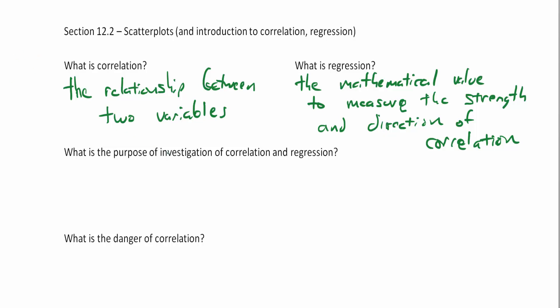The purpose of investigation of correlation and regression is to see if x and y are related. The three definitions you just wrote down for correlation, regression, and the purpose are very loosey-goosey definitions, explained at a lower level. If you want to see the actual mathematical definitions, you can check your book. But this is what we are going to focus on in this chapter - we're going to try to see if the factor of x influences the factor of y, and to what degree it does so.